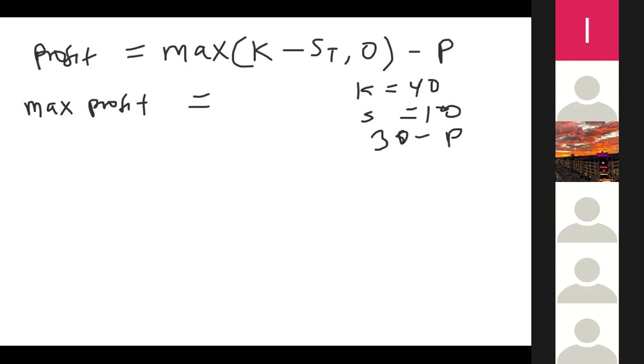So if it gets to zero, that means you're going to have K minus zero, minus P. Minus the premium that you are going to pay. So that means your maximum profit can be K minus P. I get it, you get it now.